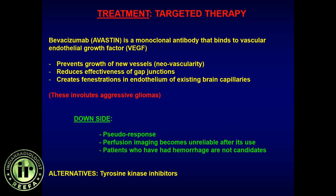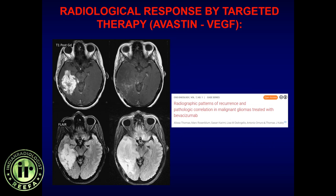The downsides of Avastin include pseudo-response — a false sense that the tumor is involuting when it is not. Patients with prior hemorrhage are not candidates. Perfusion imaging becomes unreliable in patients who have received Avastin or VEGF inhibitors, and is also generally unreliable in patients with prior hemorrhage.